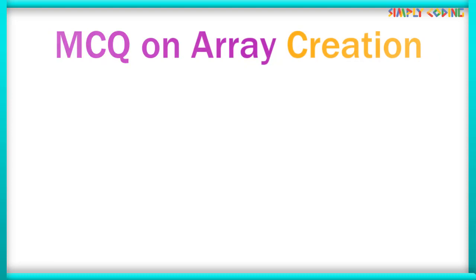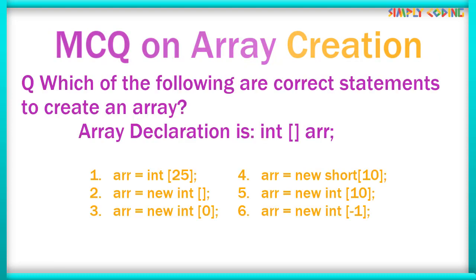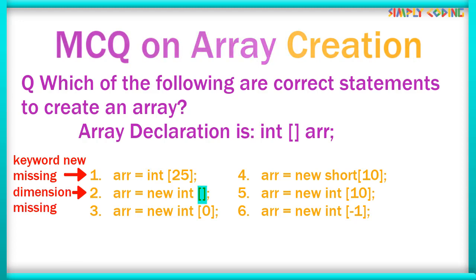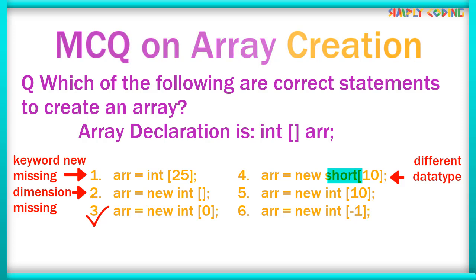Next we will see some questions around array creation — which one of these is a correct statement to construct an array. In the first statement, the keyword 'new' is missing. In the second one, the dimension is missing; you need to declare the size of the array. The third one asks: can we create an array of size 0? Yes, we can, so this is valid. Can we create a short array and assign it to int? No, we cannot. The next one has the new operator of type int with dimension, so that one is correct.